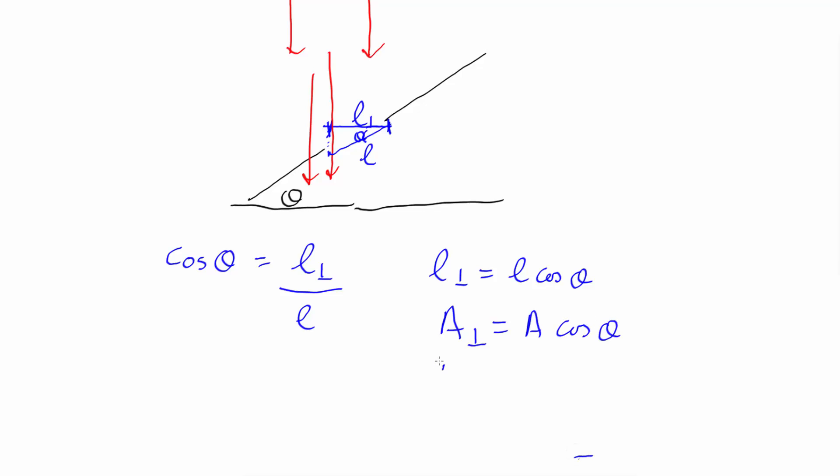And hence the total flux of radiation going through the surface is just I times A times cos theta.